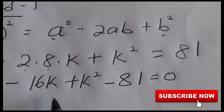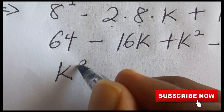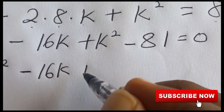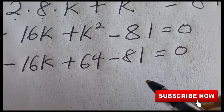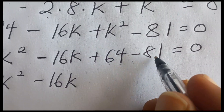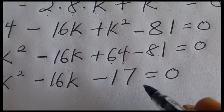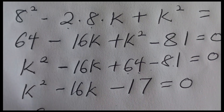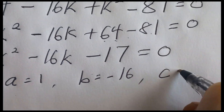Let's rearrange this in a simple order. We are going to get k squared minus 16k plus 64 minus 81 equal to 0. So we have k squared minus 16k minus 17 equal to 0. Using the quadratic formula: a equals 1, b equals negative 16, and c equals negative 17.